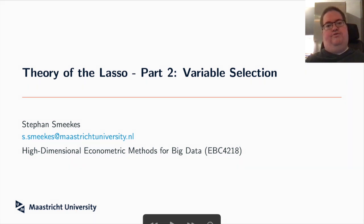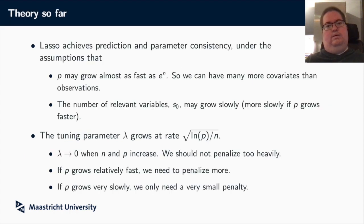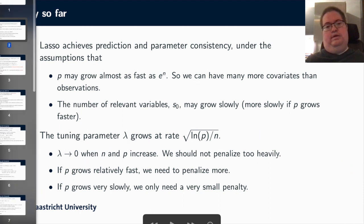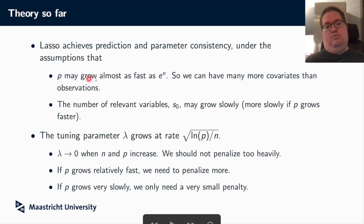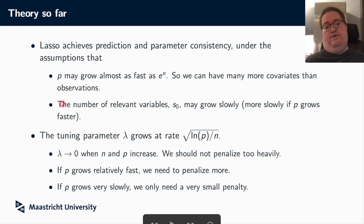In this video, I will discuss the second part about the theory of the lasso, focusing now on variable selection. What we've seen in the previous lecture was that the lasso achieves prediction and parameter consistency under a few assumptions, in particular that p can grow almost as fast as e to the power n, which basically means you can have many more covariates than observations. But the number of actually relevant variables, S0, should only grow slowly.